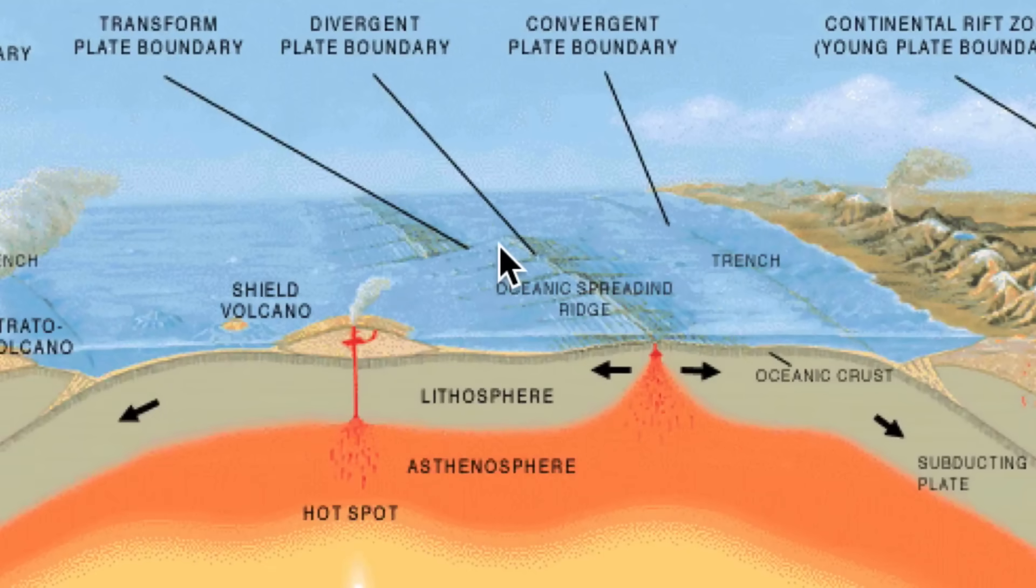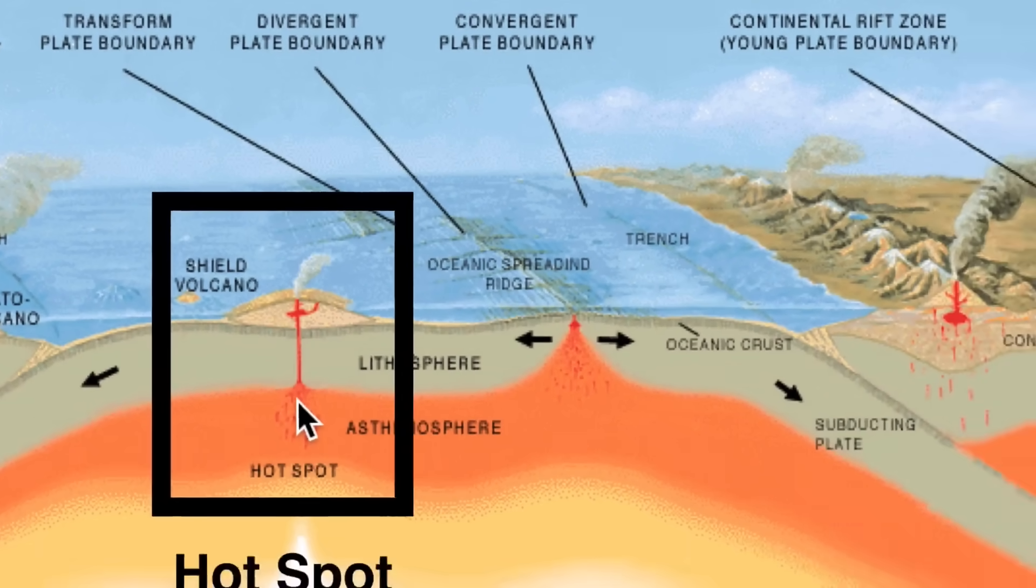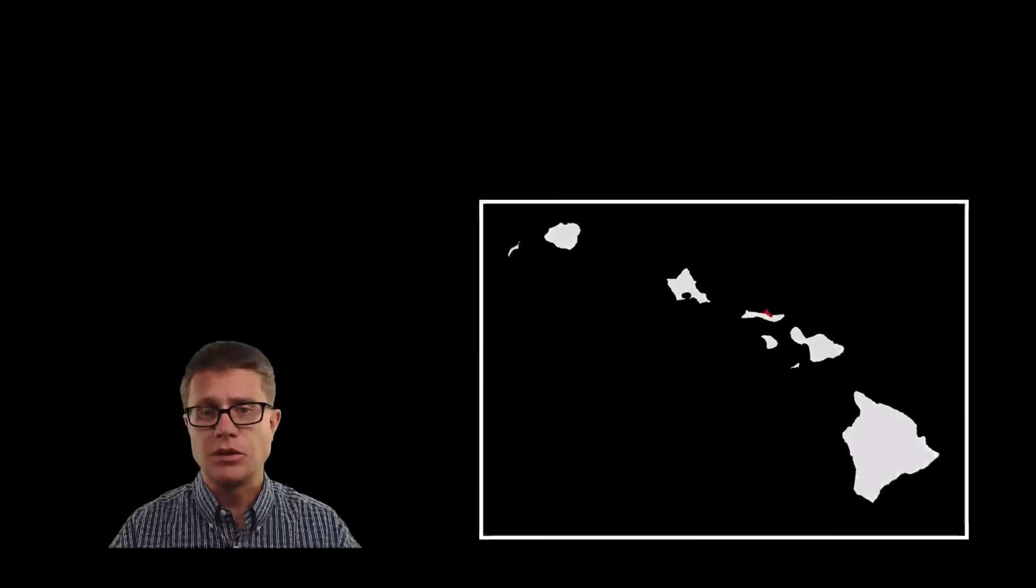But we could also have structures where there is no boundary. So if we look right here we have what is called a hot spot. Remember that is going to be an area where the mantle is close to the surface. And so for example Hawaii was formed as the plate slid over a hot spot. And let me show you what that looks like.